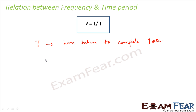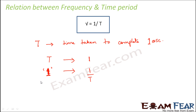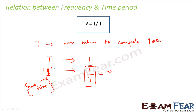In capital T — the time period — one oscillation is completed. So in one unit of time, the number of oscillations will be one divided by T. Frequency is defined as the number of oscillations in unit time, so in unit time the number of oscillations is one by T. Therefore, frequency equals one by T. That is why frequency is equal to one divided by the time period.